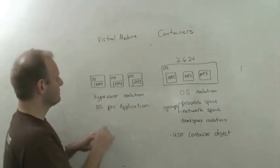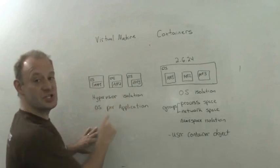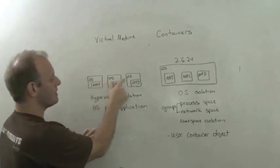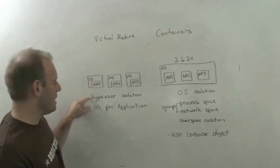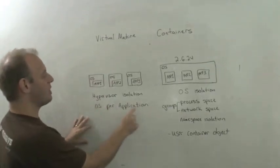If you want to have multiple applications, you'll actually have multiple virtual machines, each running their own operating system. What we have here is hypervisor level isolation and an OS per application.